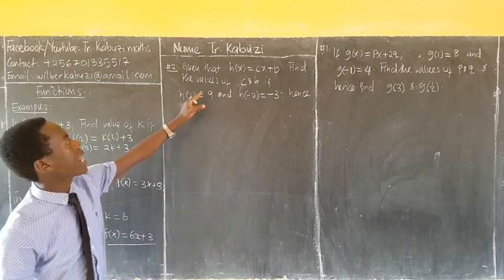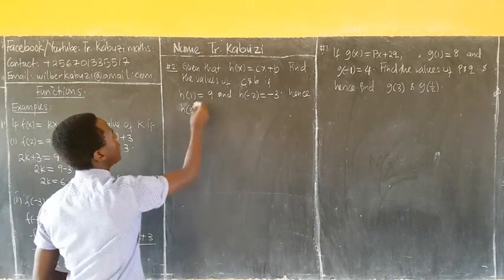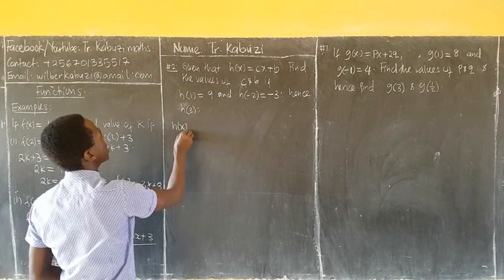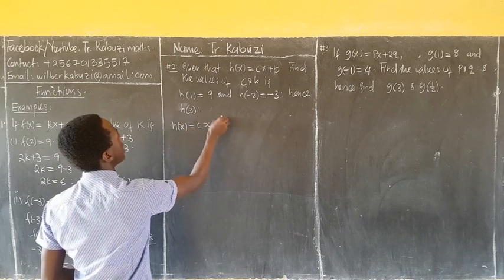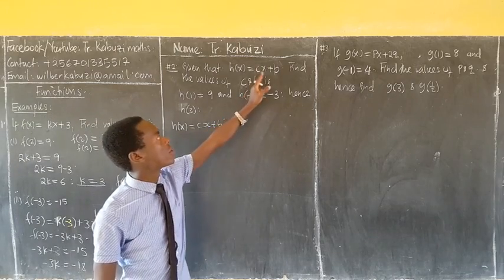Now, from there, I'm going to use that idea in this number. So here, they are giving us that H of x is equal to Cx plus B. Now they are giving us two conditions because we also have two unknowns.